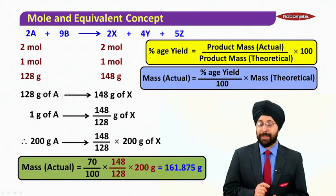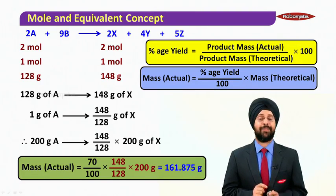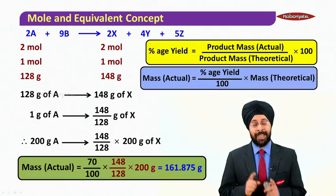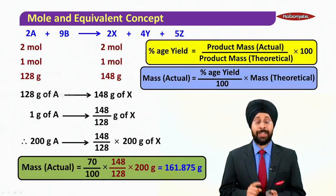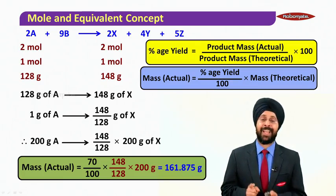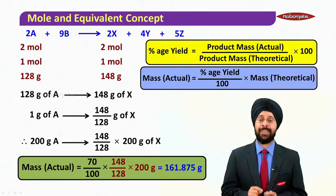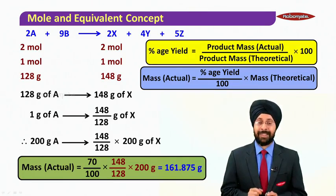And that is going to give us 161.875 grams. So first we calculate the theoretical amount and then we calculate the actual amount using the yield. Thank you.